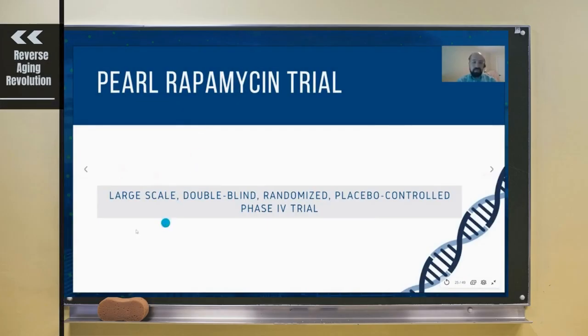What's special about PEARL is it's a large-scale, double-blind, randomized, placebo-controlled Phase 4 trial. Phase 4 just means it's already an FDA-approved medication, so we're not looking for FDA approval—it's already been approved. We're just looking to add data to the drug.